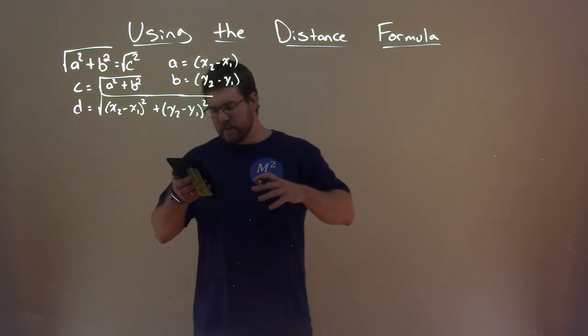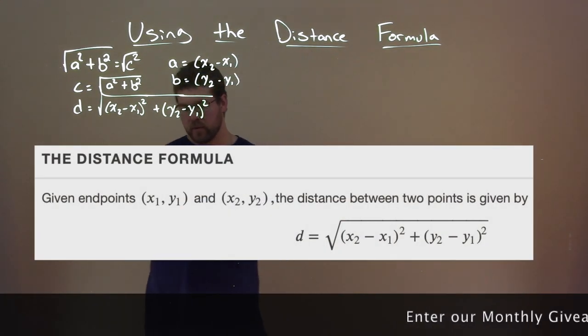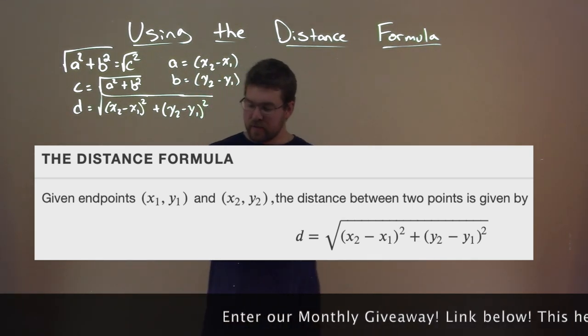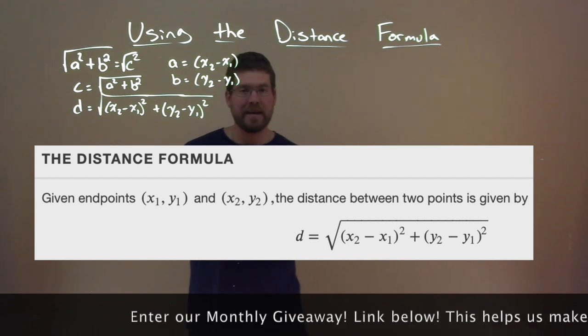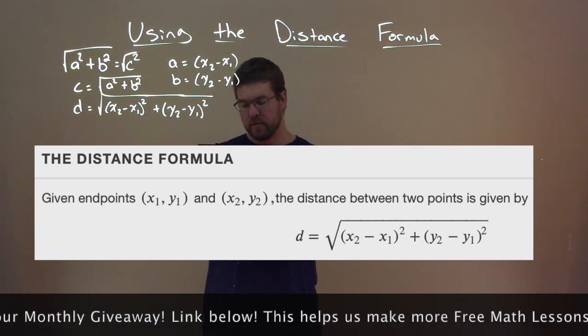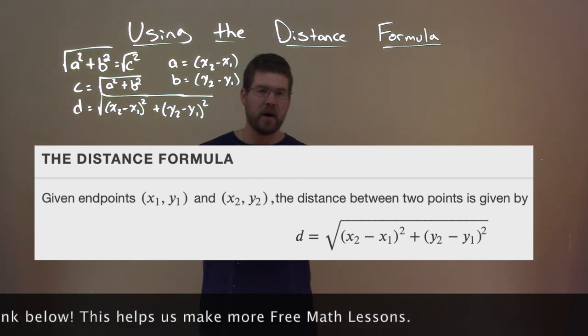So in nice terms, the distance formula is defined as such. Given endpoints x1, y1, and x2, y2, the distance between two points is given by this: d equals the square root of x2 minus x1 squared, plus y2 minus y1 squared.